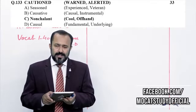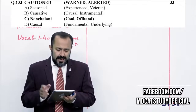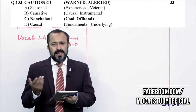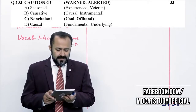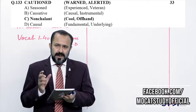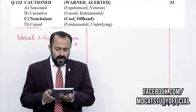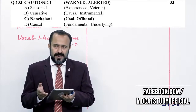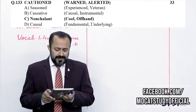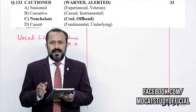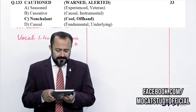Question 132: cautioned — محتاط — antonym Charlie (nonchalant) — غیر محتاط، easy going — Charlie is the best answer۔ Alpha (seasoned) — experienced ہوتا ہے۔ Causative — linguistics کا term — answer نہیں۔ Causal — cause سے related — یہ بھی answer نہیں ہے۔